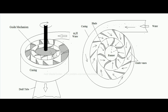Due to the torque, the runner starts rotating and rotational power is developed over the shaft. This shaft is connected to a generator set for developing electrical power. After passing through the runner blades, water collects at the center and falls down in the axial direction by the help of a draft tube.